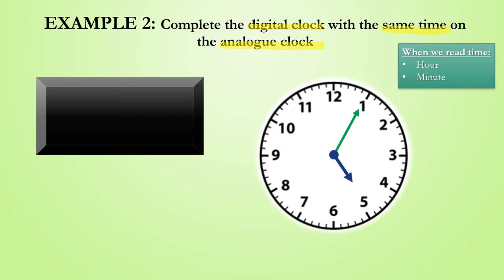We see that the hour hand is pointing directly at the 5, and we are therefore in the 5th hour. The minute hand is pointing directly to the 1. Since we know that each number on the clock represents a multiple of 5, we know that 5 minutes have passed the hour, because 1 multiplied by 5 is equal to 5.